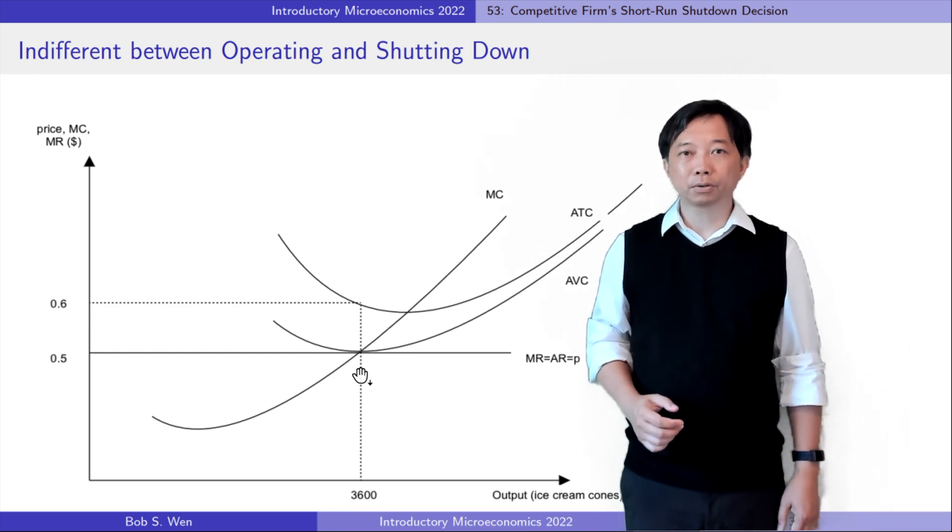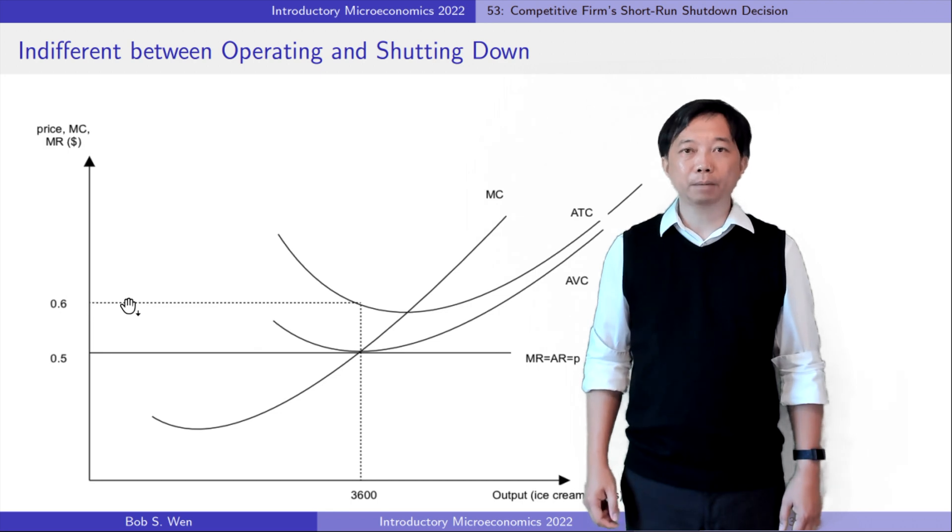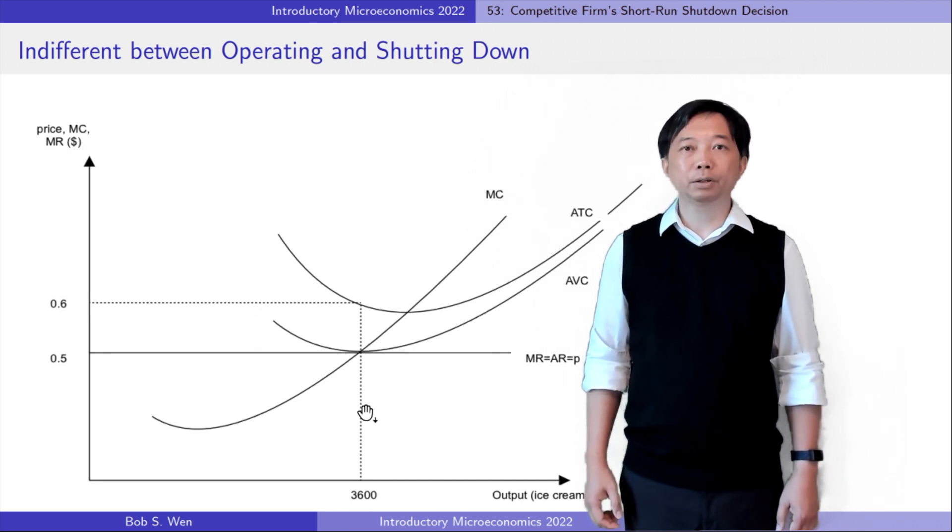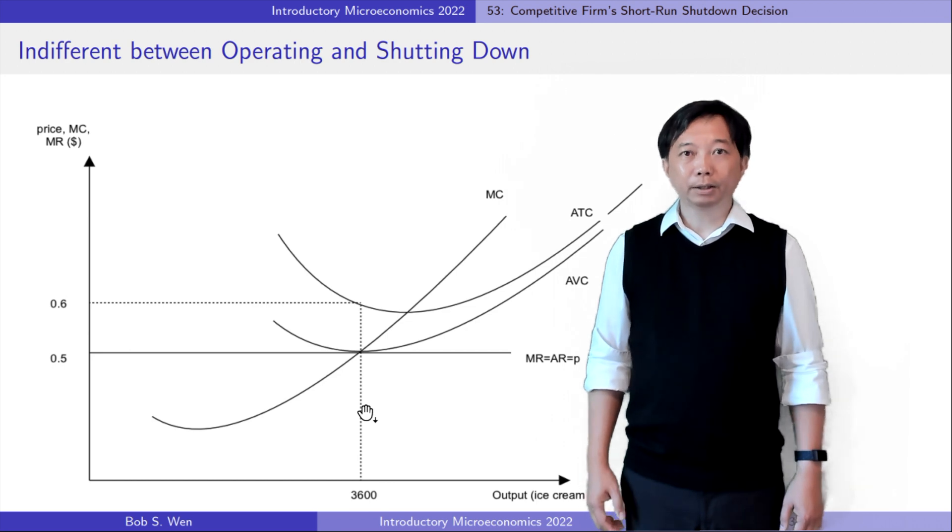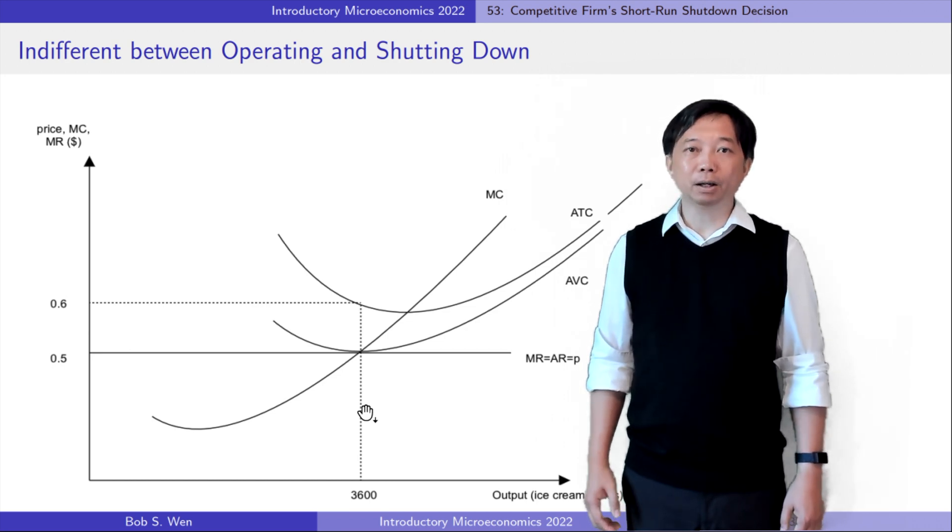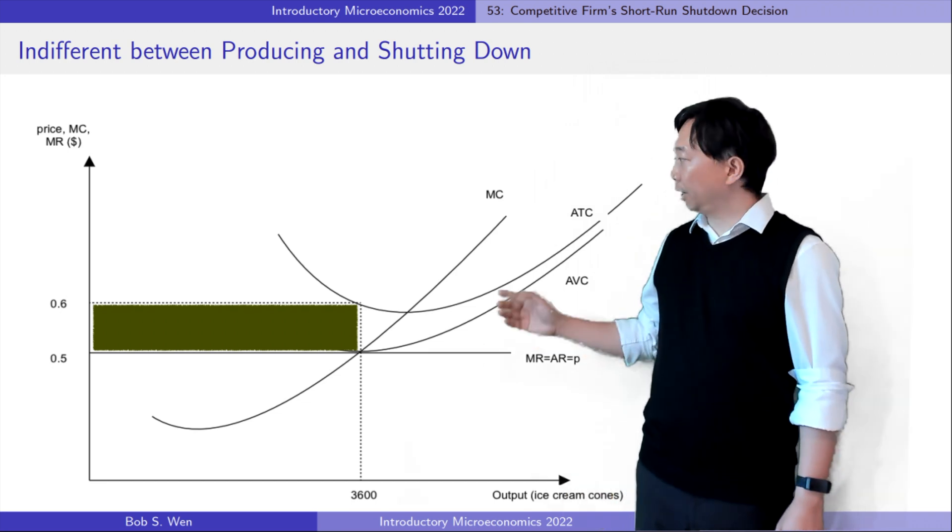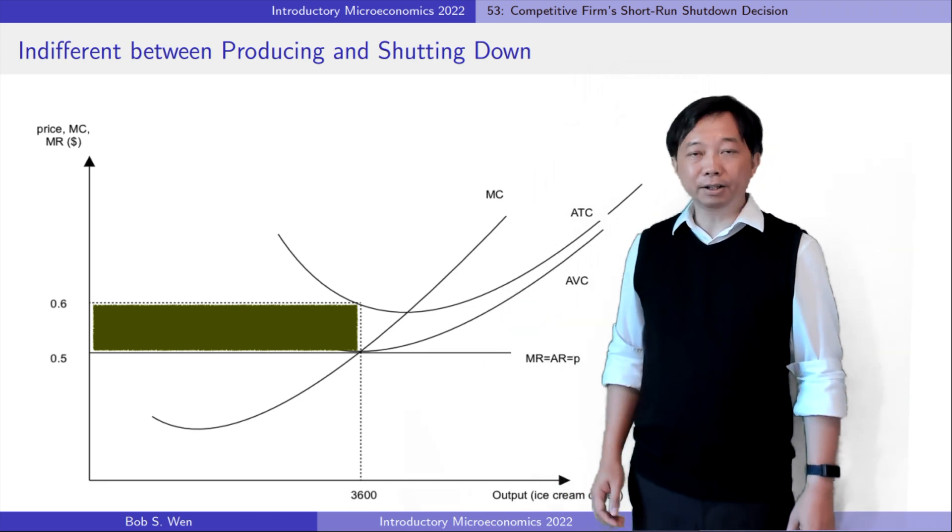However, its total cost is 0.6 times 3600, which is 2160 dollars. Therefore, the ice cream firm makes a loss of 360 dollars as the shaded rectangle indicates.